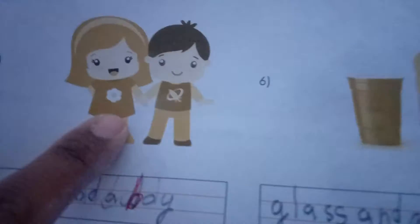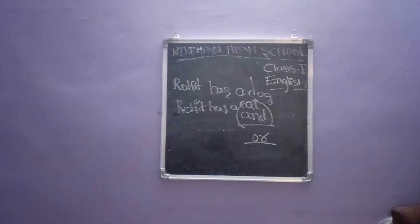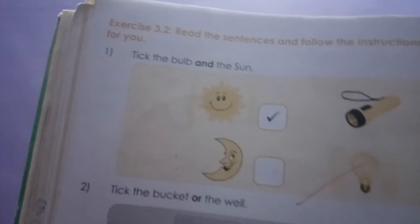See the fifth one — what are we seeing here? A boy and a girl. G-I-R-L, girl, and a boy. See the sixth one — what are we seeing? A glass and a bottle. G-L-A-S-S, glass, and B-O-T-T-L-E, bottle. Write: a glass and a bottle.